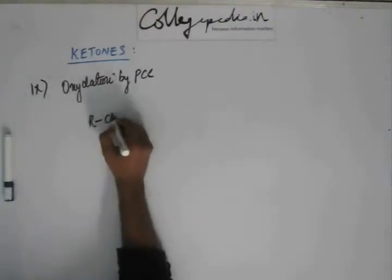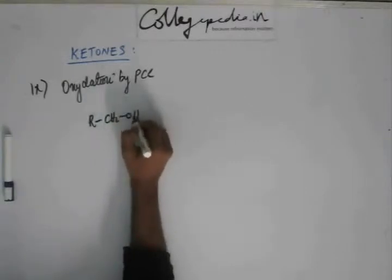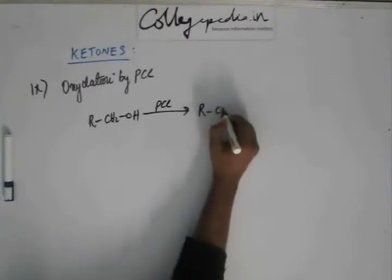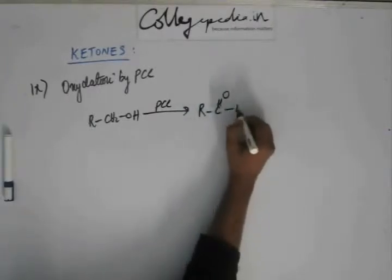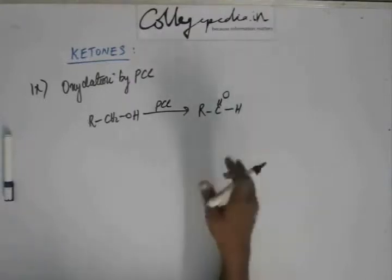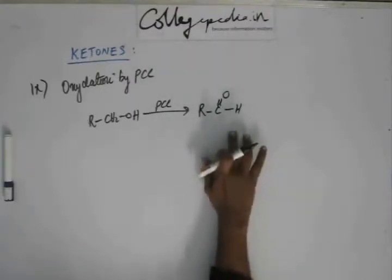If I take a 1 degree alcohol and I use PCC, then I get cleanly and neatly aldehyde. This aldehyde will not be further oxidized to give carboxylic acid.